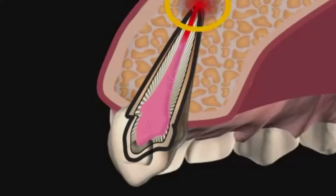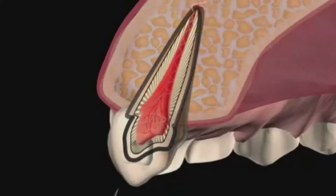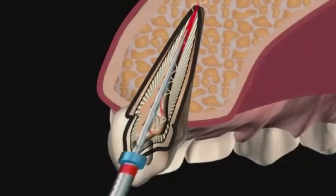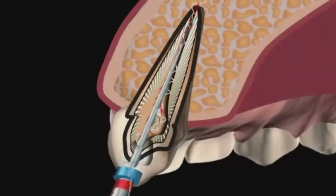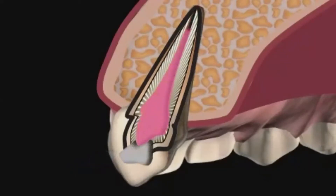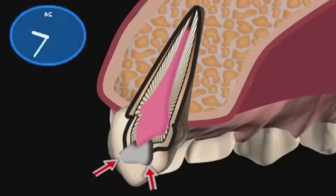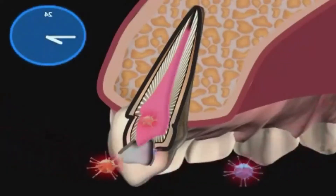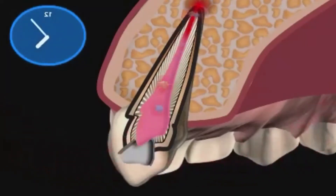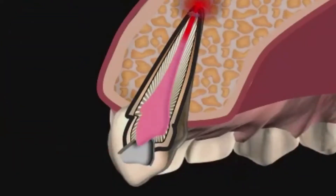If the root treatment is performed correctly but the tooth is only filled with a simple filling, for example amalgamate, the filling may develop leaks over the years. This in turn allows undetected bacterial invasion in the tooth interior. Root tip inflammation is a probable consequence. Chronic bone infection is usually the consequence of bad root treatment or teeth that are no longer filled in tightly.